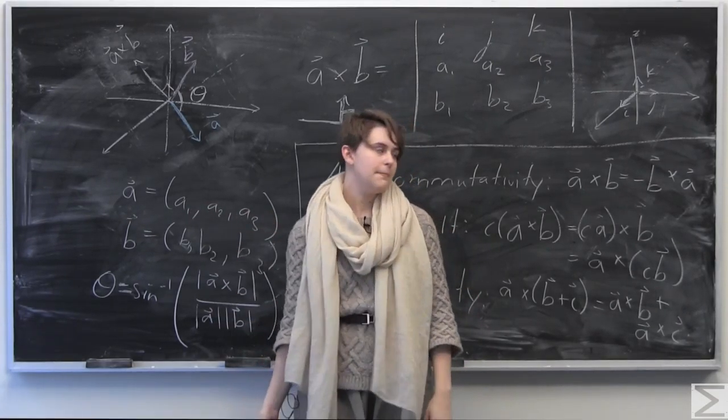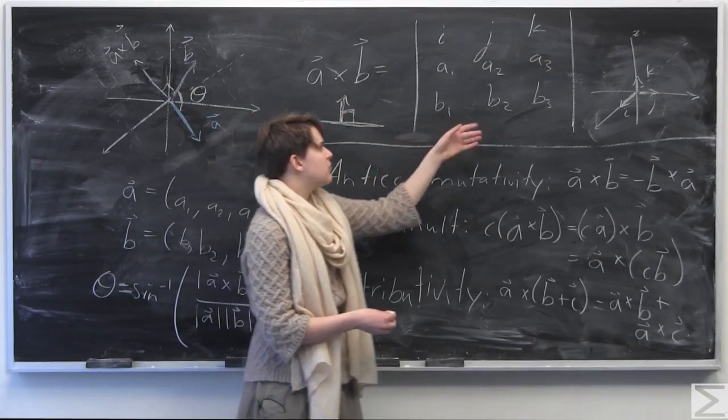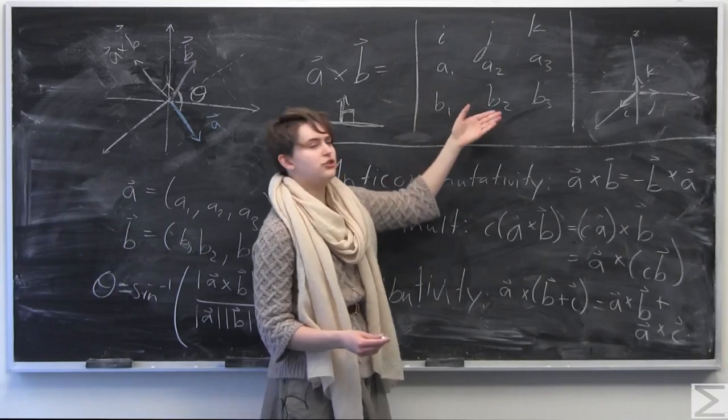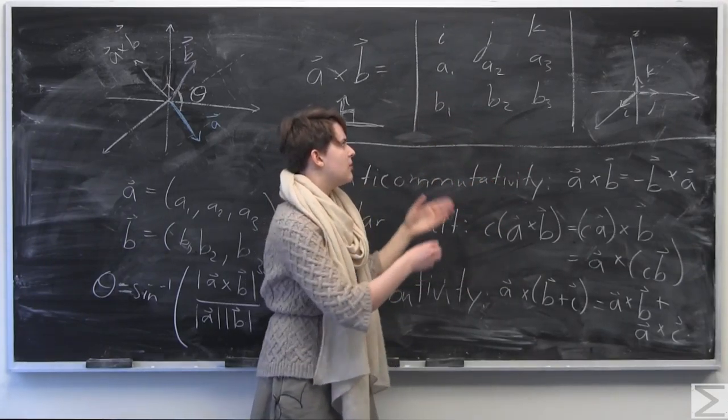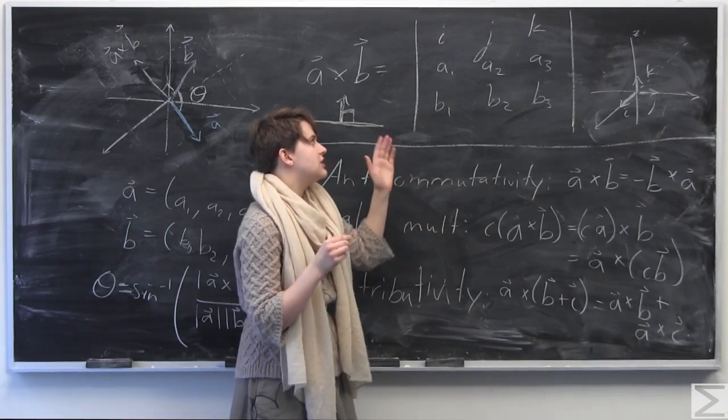The coefficients of i, j, and k are just going to be the coefficients of your vector here. So you get some kind of thing here where we have, for example, c1, c2, c3, where c is equal to a cross b. So that's what we're doing when we're taking the cross product here.